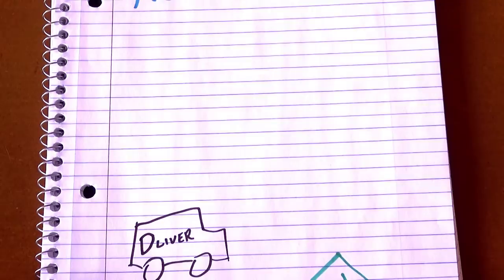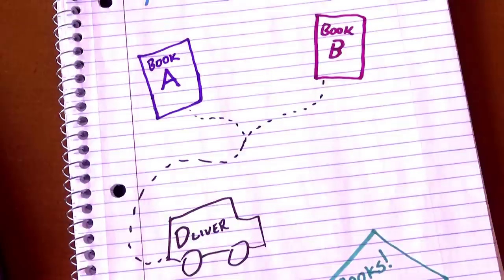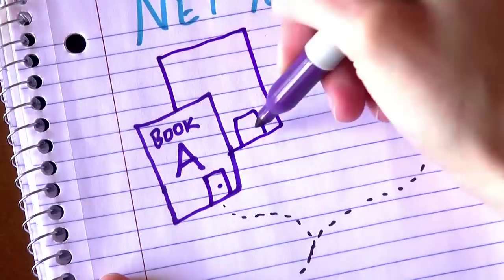The delivery driver picks up your two packages and starts reading the labels. One is from a small independent bookstore they've never heard of. The other is from a large chain they've already delivered like 20 packages from today.